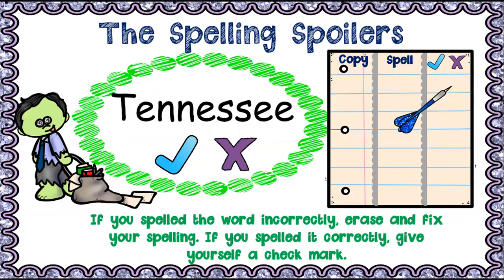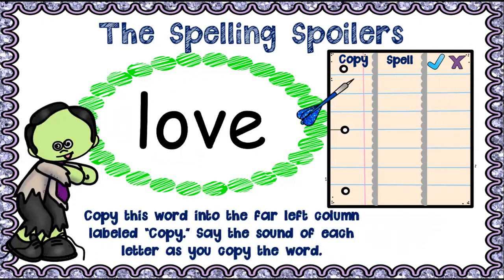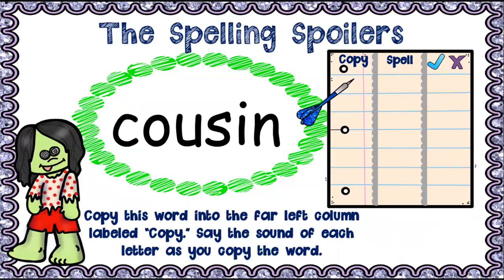Number seven — 'love.' Check your answer. Bubble 'yes' if you got it correct, and if not write it down correctly in the copy column and bubble 'no.' Number eight — 'cousin.' Cousin. This one's tricky because it's two vowels making that schwa sound. Check your answer — if you got it right, bubble 'yes'; if incorrect, bubble 'no' and copy it correctly.